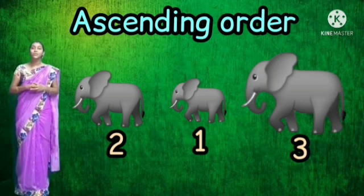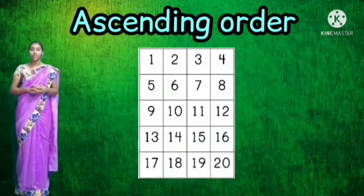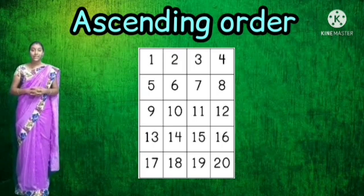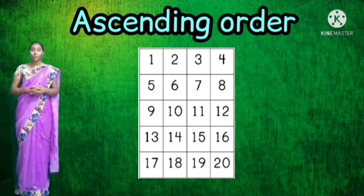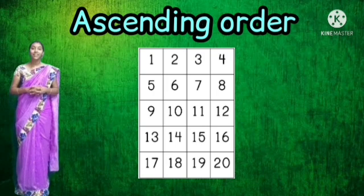Now let's see the example using numbers, children. Do you all know the numbers from one to twenty? Say the numbers along with me: one, two, three, four, five, six, seven, eight, nine, ten, eleven, twelve, thirteen, fourteen, fifteen, sixteen, seventeen, eighteen, nineteen, and twenty.